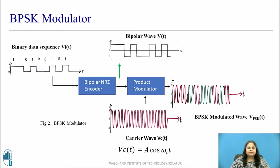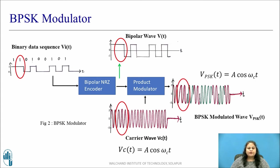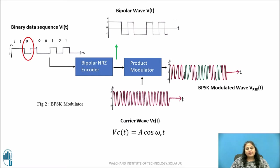Let us see its working in detail. When the input bit is 1, the output of the bipolar NRZ encoder is a positive constant voltage, say +1 volt, which is multiplied with the carrier A cos(ωc·t) during the bit slot in the product modulator. Thus, the output during that bit slot is given by V_BPSK(t) = A cos(ωc·t). Thus, the carrier signal and the BPSK signal are in phase with each other, giving a 0 degree phase shift.